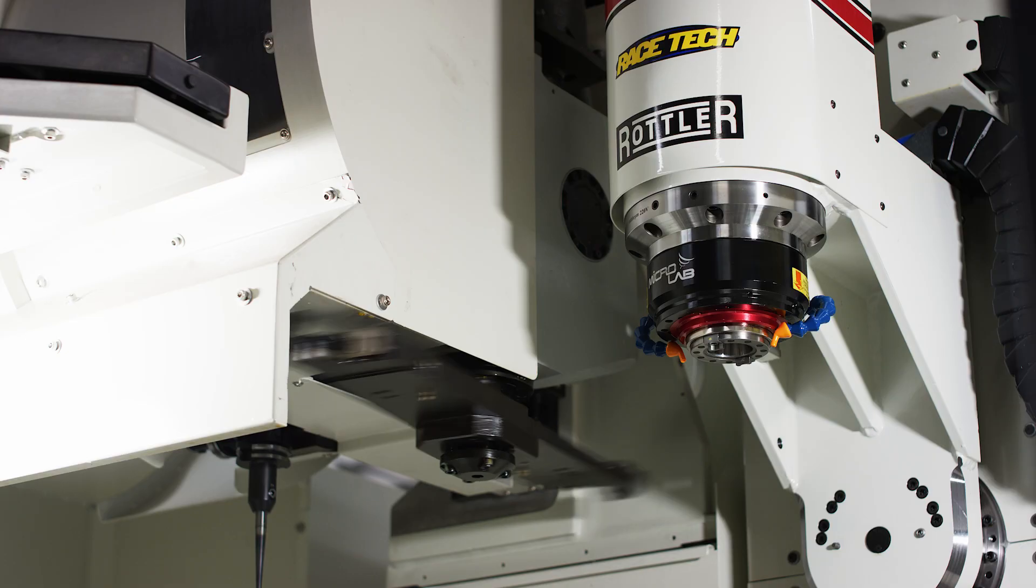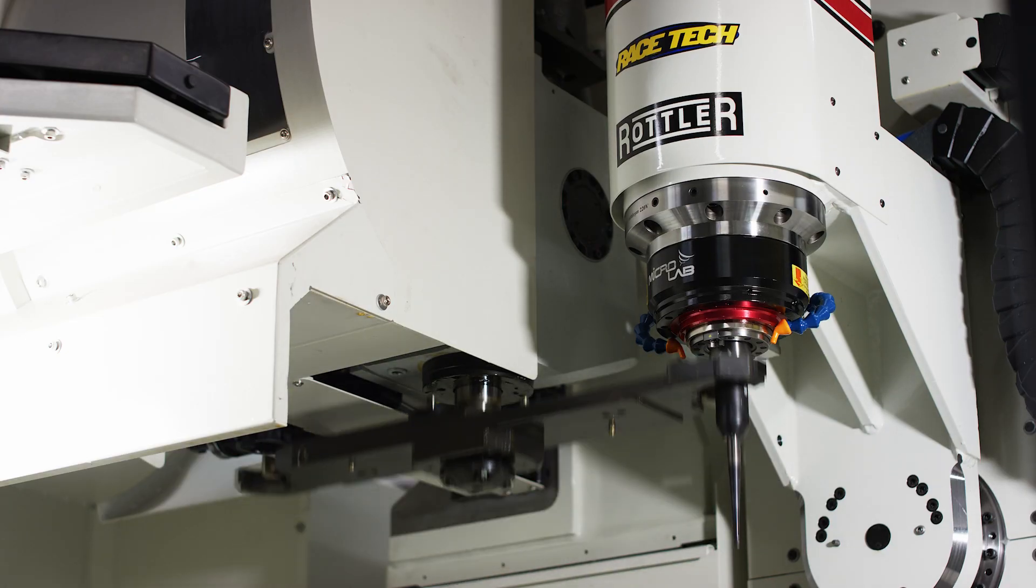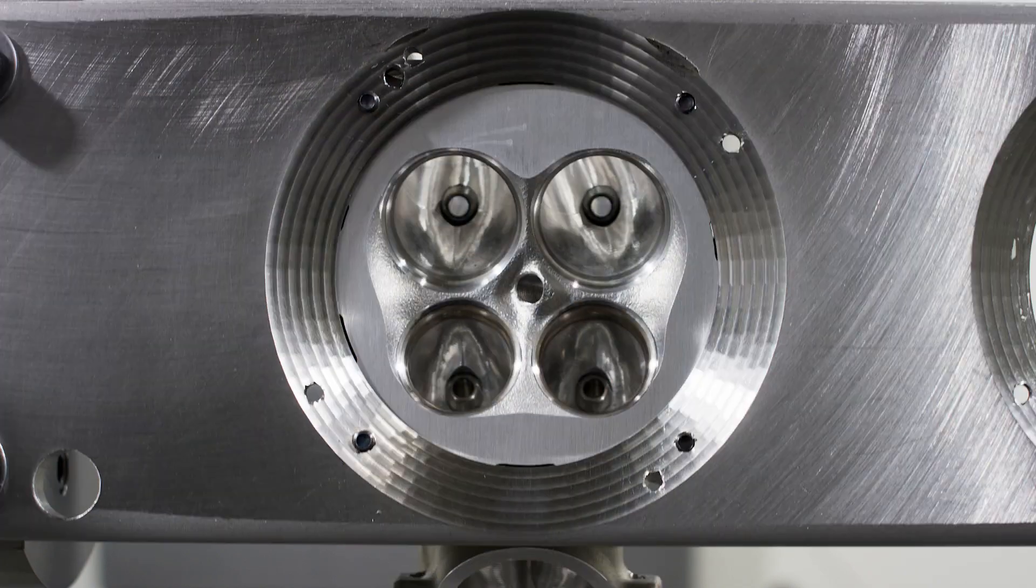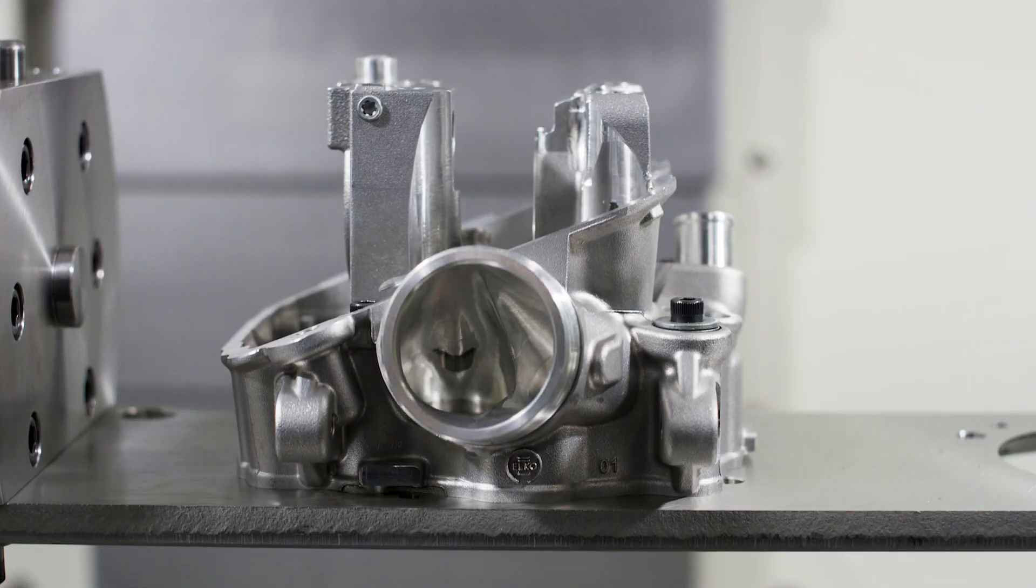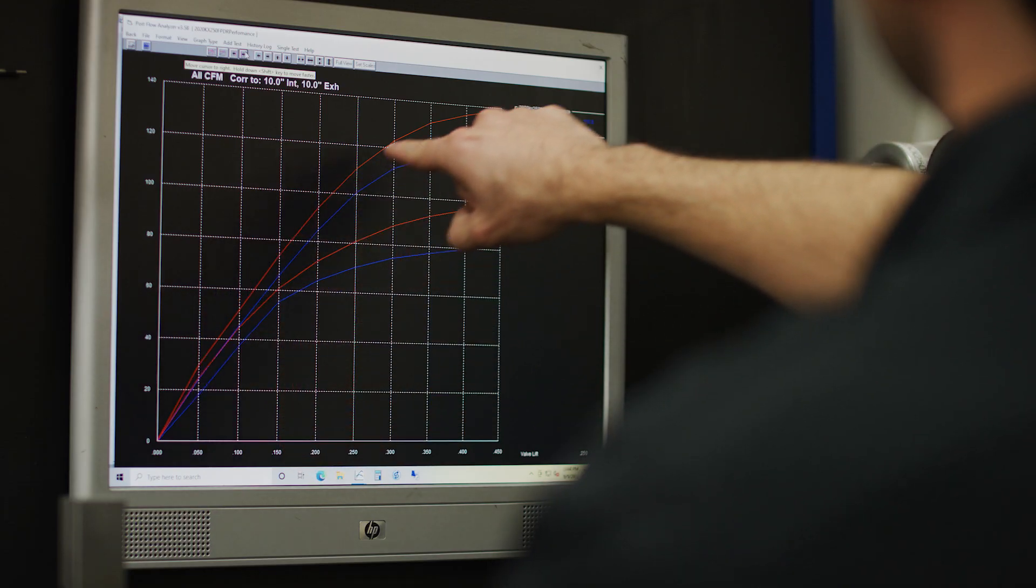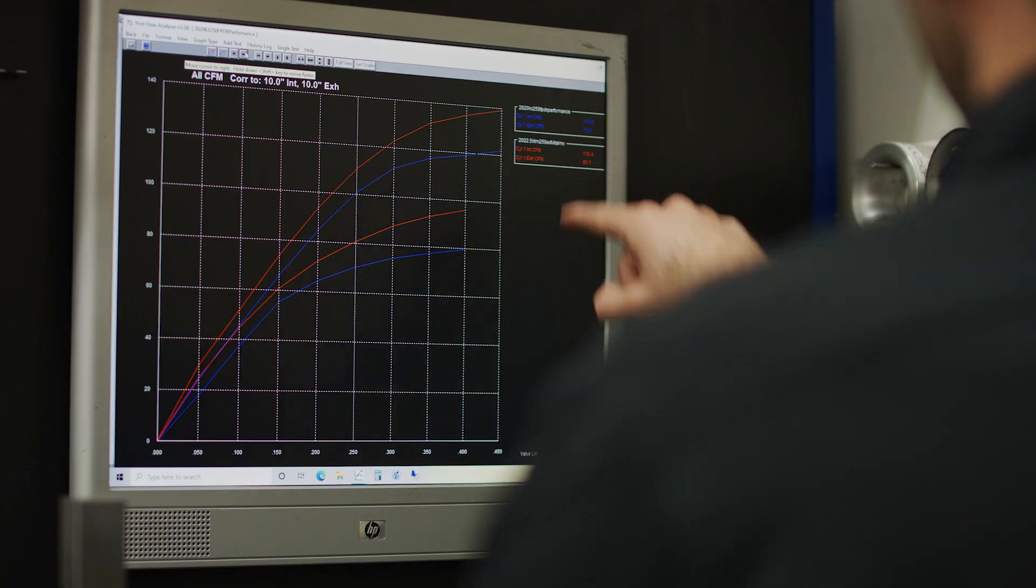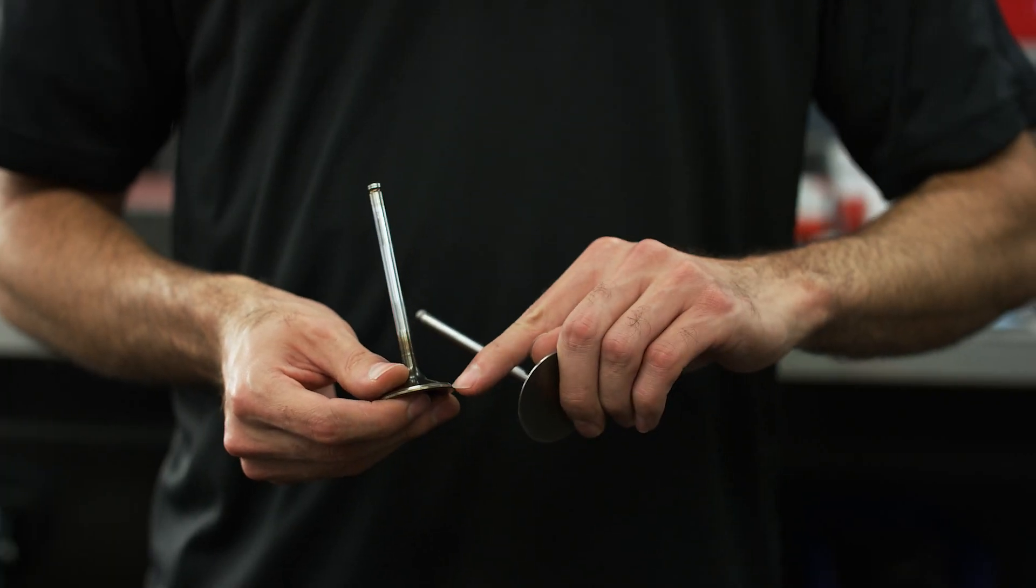We're going to be covering a wide range of topics and going over every component that is critical in building a world-class race engine. So a few things that we're going to cover is bore, stroke, piston design, high compression pistons versus low compression pistons.